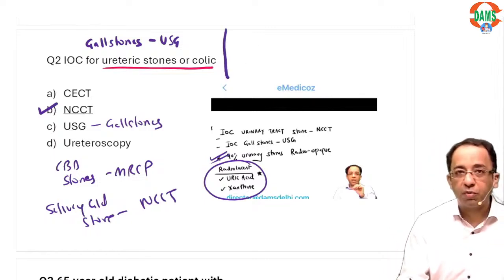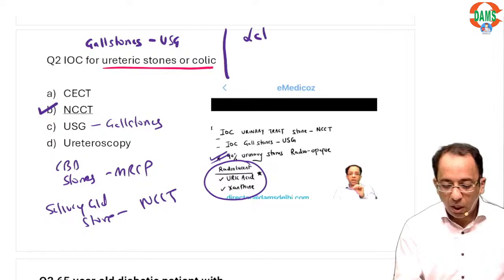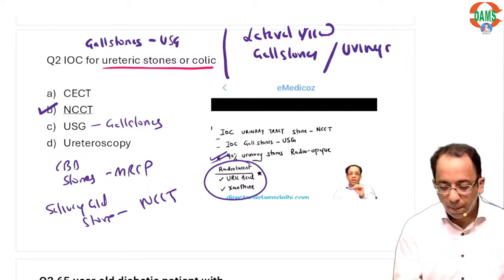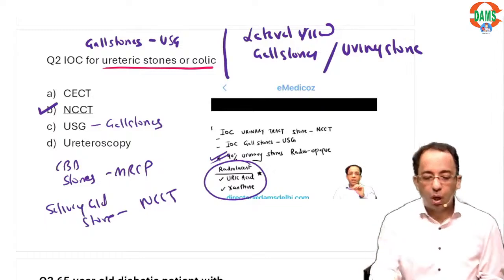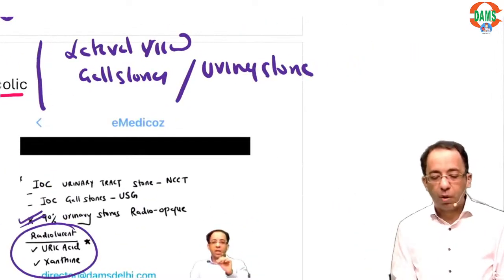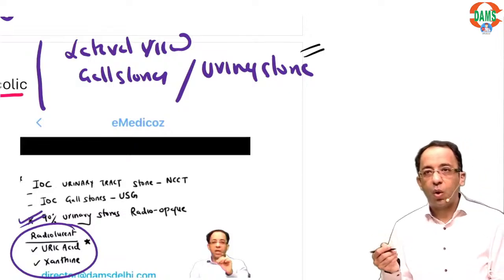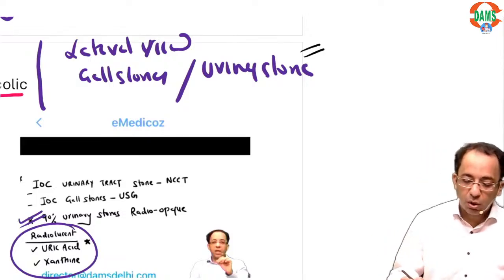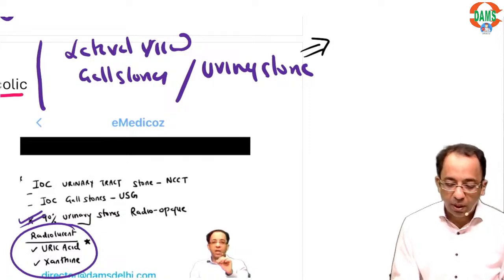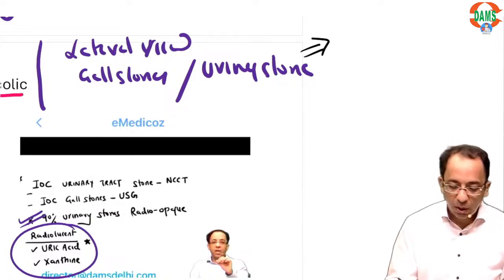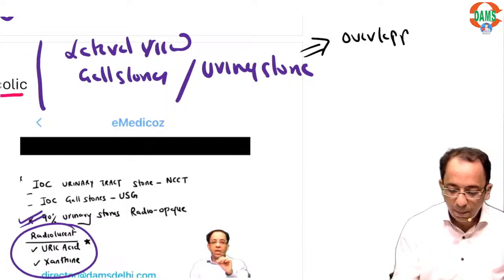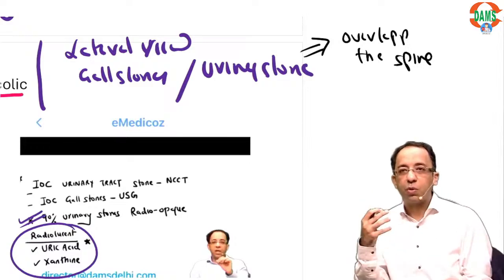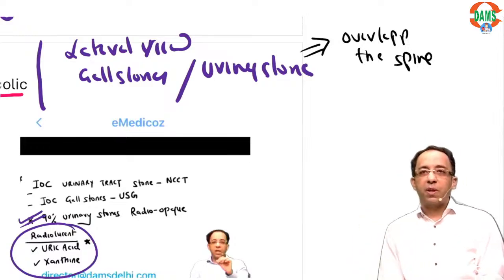A possible question for NEET PG: on a lateral view, how do you differentiate a gallstone from a urinary stone? Always remember: urinary stones will be overlapping the spine — because urinary stones are retroperitoneal, they will overlap the spine on a lateral view. These are the kinds of direct questions they ask.